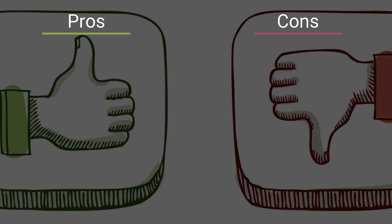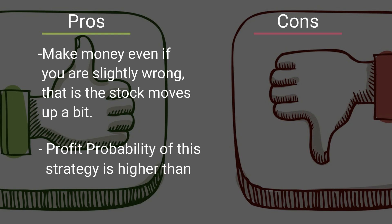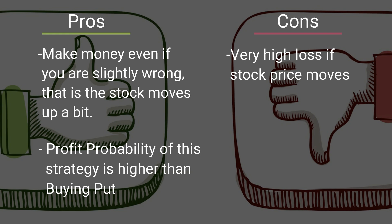Now let's discuss the pros and cons. The pros: you will make money even if you are slightly wrong — if the stock moves up a bit, you will still end up in profit. The probability of profit is higher than buying a put. The cons: you will have high losses if the market moves significantly against your view — that is, upward.